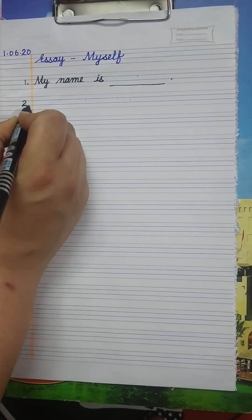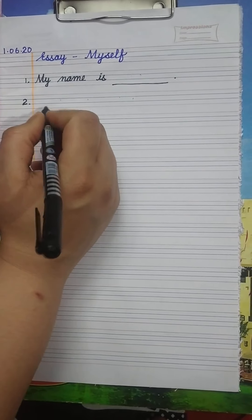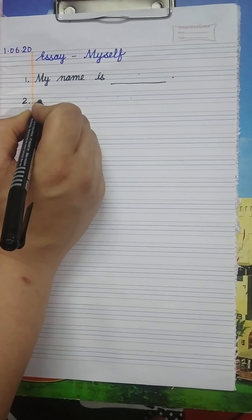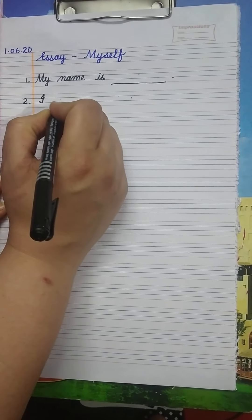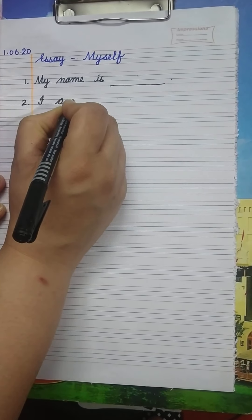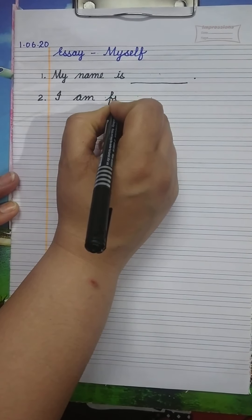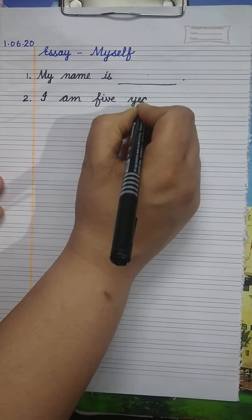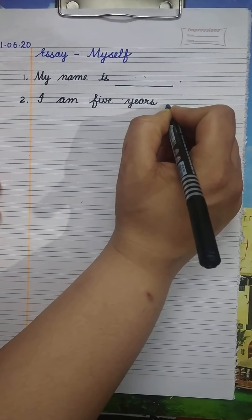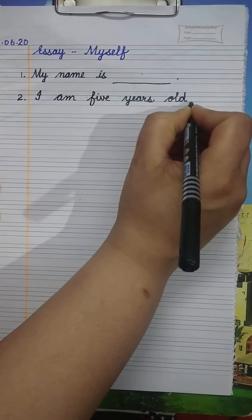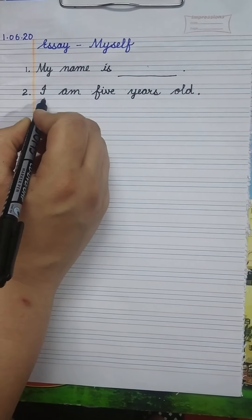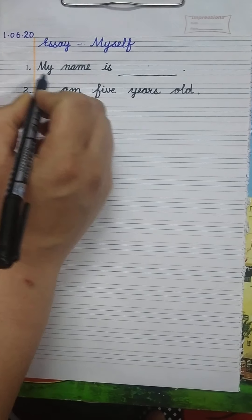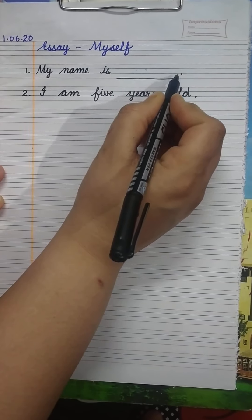Now come to the second line. Number two: How old are you? I think most students are five years old, so write: I am — A-M — 5 — F-I-V-E — years old. Full stop. I am 5 years old.